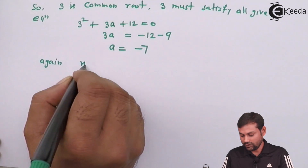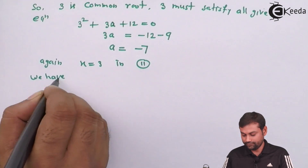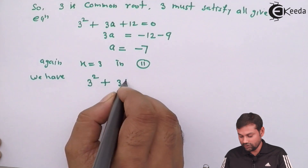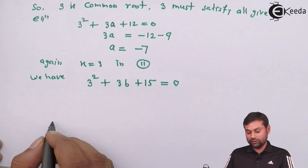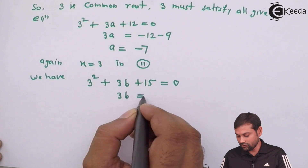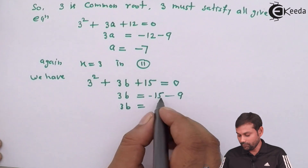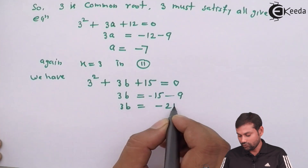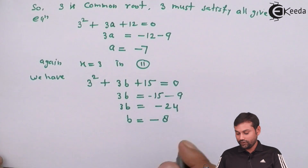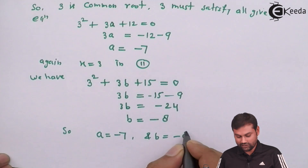Now putting x = 3 in equation 2: x² + bx + 15 = 0 gives 3² + 3b + 15 = 0, so 9 + 3b + 15 = 0, which gives 3b = -24, so b = -8. Therefore, a = -7 and b = -8.